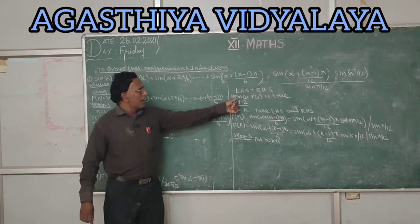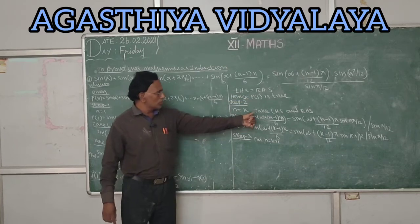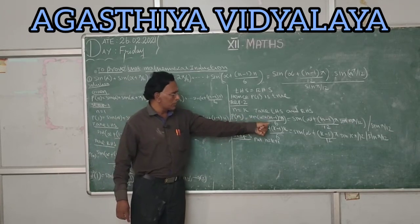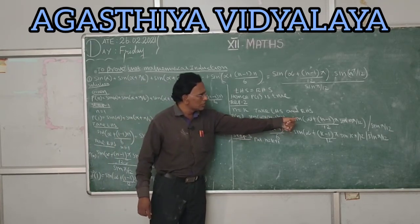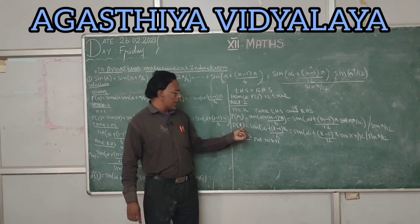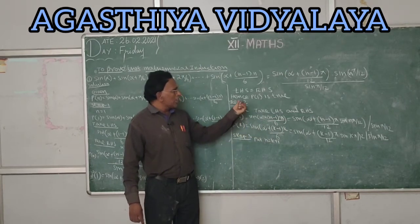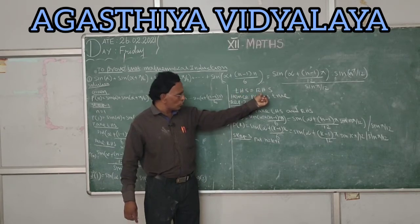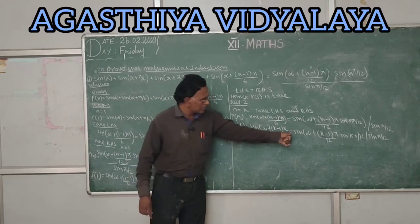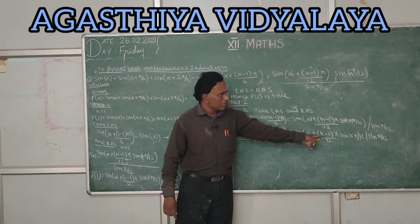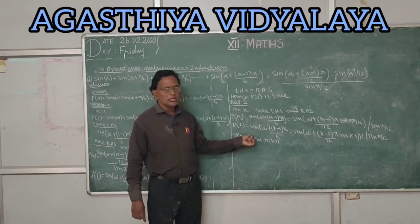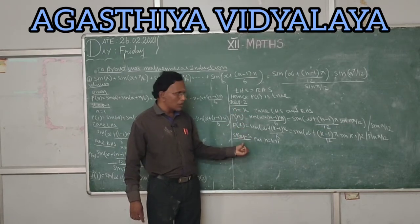Step 2: put n equal to k. P(k) states: sin α + ... + sin(α + (k−1)·π/6) equals sin(α + (k−1)π/12) · sin(kπ/12) divided by sin(π/12). We assume P(1) is true and P(k) is true, meaning the inductive hypothesis holds.